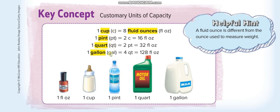Memorize these conversions. The abbreviations are: cup = c, pint = pt, quart = qt, gallon = gal, fluid ounce = fl oz. One cup equals 8 fluid ounces. One pint equals 2 cups, which is 16 fluid ounces. One quart equals 2 pints — so that's 4 cups and 32 fluid ounces.